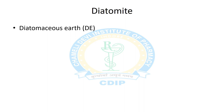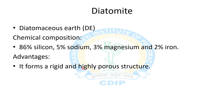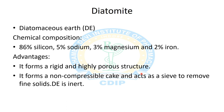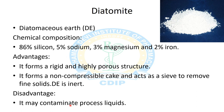The first filter aid is diatomite, also known as diatomaceous earth. Its chemical composition is 86% silicon, 5% sodium, 3% magnesium, and 2% iron. Advantages: it forms a rigid and highly porous structure, forms a non-compressible cake, acts as a sieve to remove fine solids, and is inert in nature. Disadvantage: it may contaminate the process liquids.